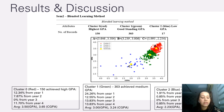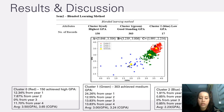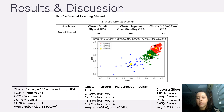For SEM 2, the blended learning method: Cluster 0 (red) — 150 students achieved high GPA, with 12.34% from year 1, 7.87% from year 2, 0% from year 3, 11.70% from year 4, average GPA 3.50, CGPA 3.65. Cluster 1 — 303 students achieved medium GPA, with 24.26% from year 1, 12.55% from year 2, 13.83% from year 3, 13.83% from year 4, average GPA 3.0, CGPA 3.24. Cluster 2 — 17 students achieved low GPA, with 1.95% from year 1, 0.85% from year 2, 0% from year 3, 0.85% from year 4, average GPA 2.23, CGPA 1.99.